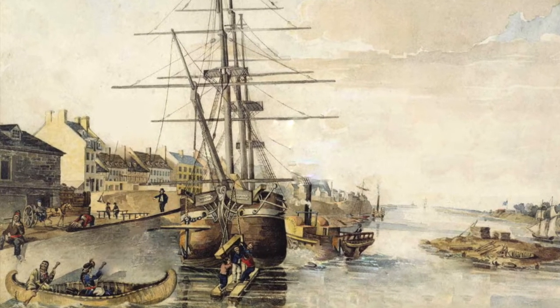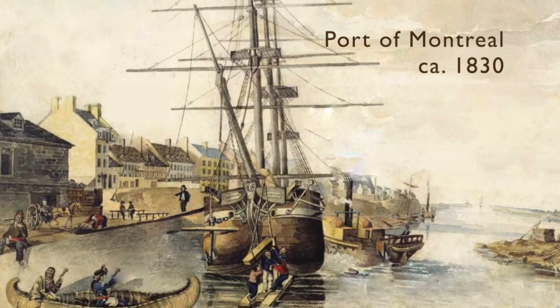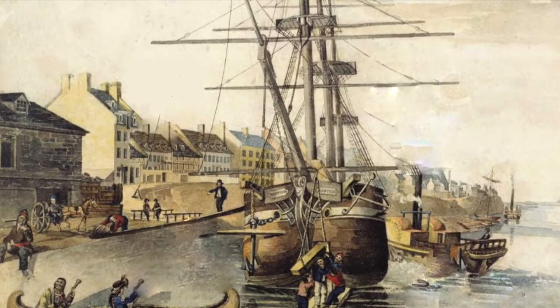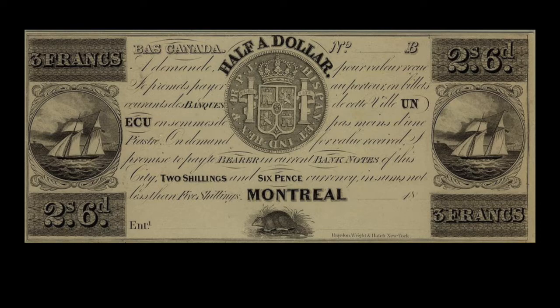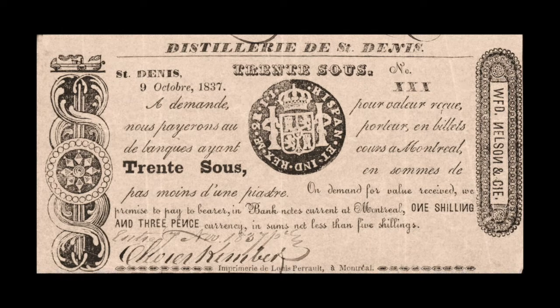In 1837, there were hundreds of issues of private paper scrip in the British North American colonies, as well as new imports of copper tokens. To accommodate illiterate users of the scrip, a lot of it shows pictures of the coins they were intended to replace. For example, one shows a picture of a Spanish-American two reales piece — the equivalent of a quarter dollar, fifteen pence, or thirty sous.